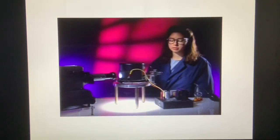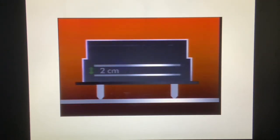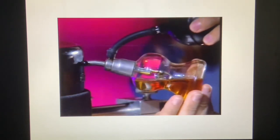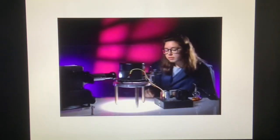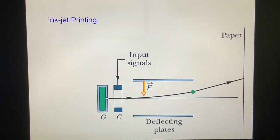This Millikan oil drop apparatus is similar to the device used in the first successful measurement of the charge on a single electron. Inside this chamber are two horizontal metal plates separated by about two centimeters. We'll spray a fine mist of oil droplets between the plates and observe them as they fall. If we apply a high voltage to the plates, some of the oil droplets are accelerated upward or downward because of the presence of minute electrical charges on the drops. We can reverse the direction of the field with this switch. Let's follow the motion of one of the drops as the field is reversed. First, the field is vertically upward, then off, then vertically downward. Notice how the droplet has reversed direction. Off, upward, off, downward.